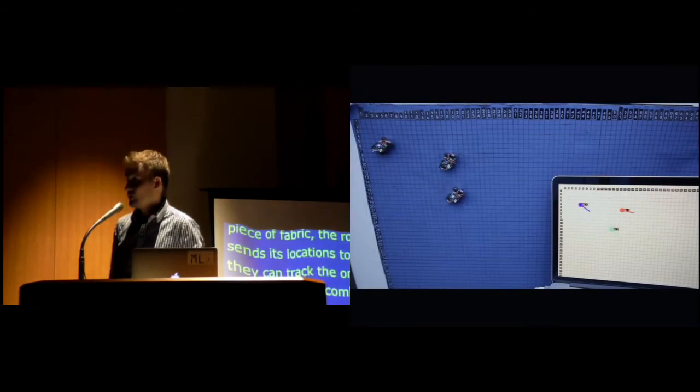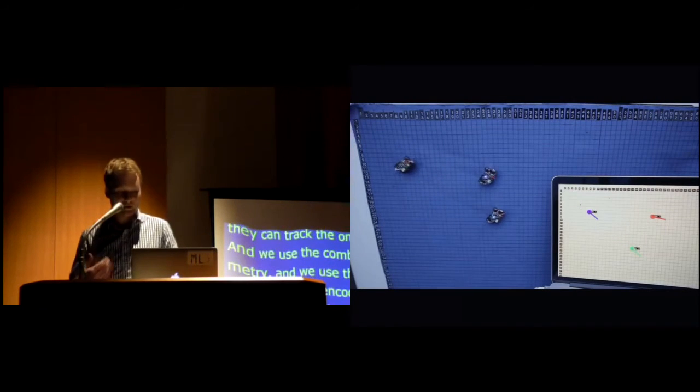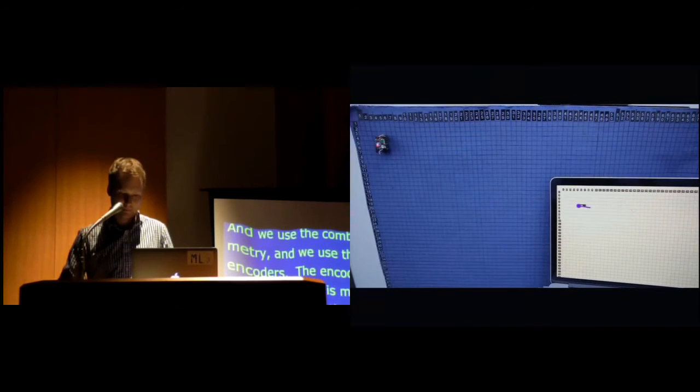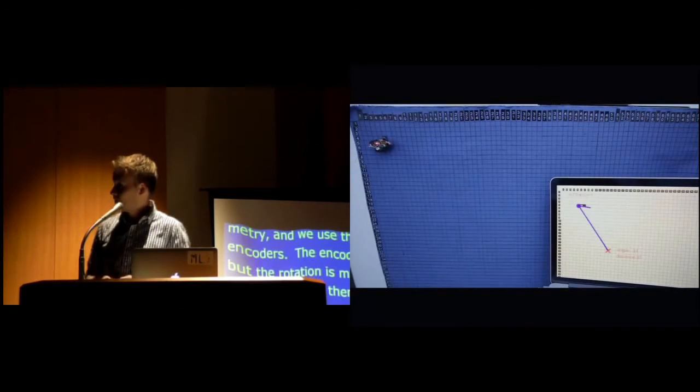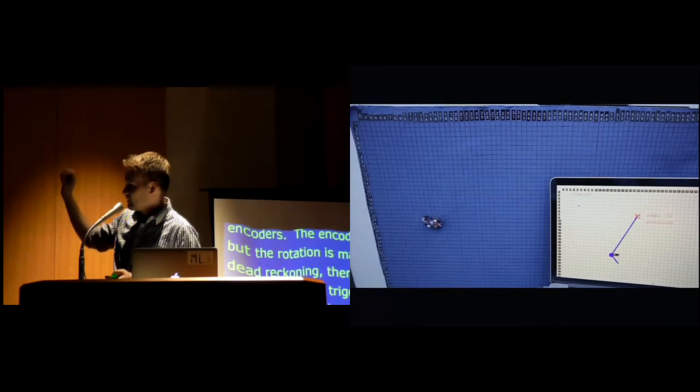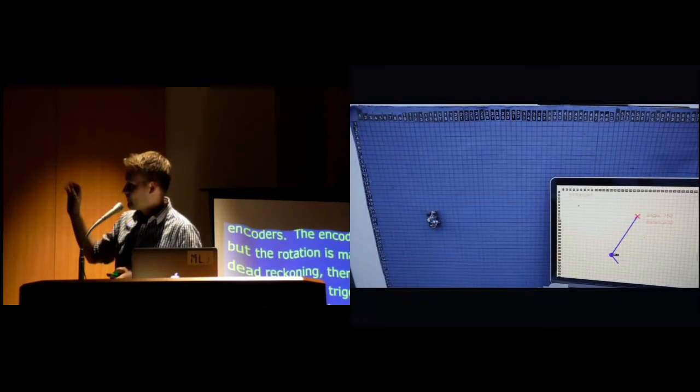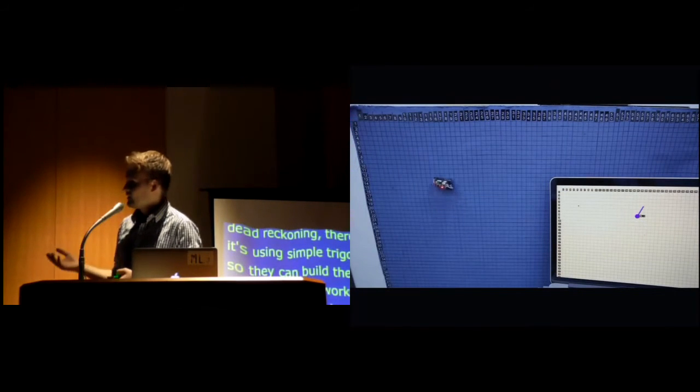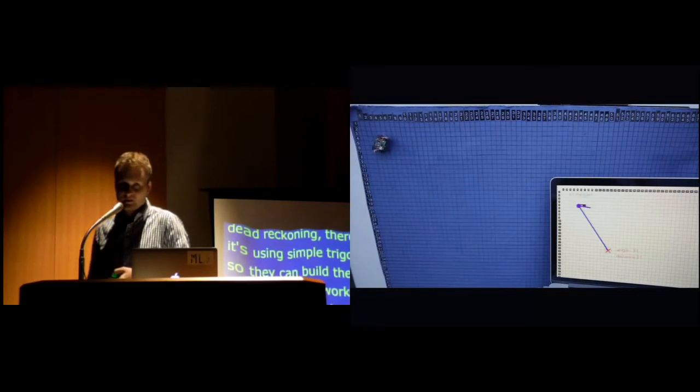And this also works for multiple robots, so it can be as many as any number of them. And here's a more example of autonomous navigation, so clicking on a different place on the fabric, it will try to go to the place autonomously.